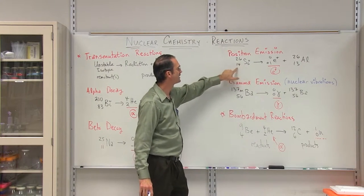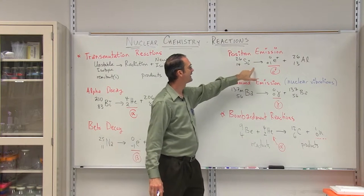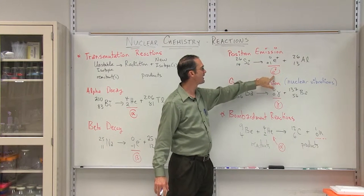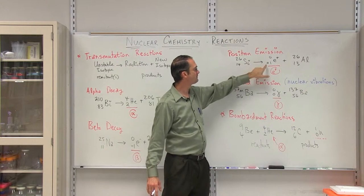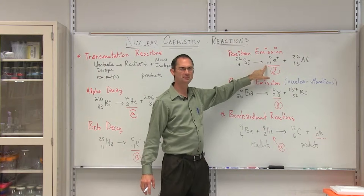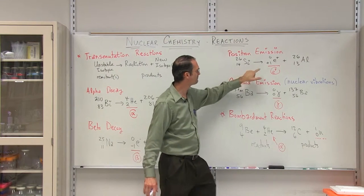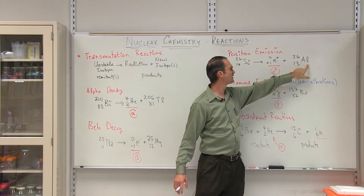In this case, if you have silicon, it will decay by a positron emission. In this case, 14 is the charge. We're going to lose a positron, which is a plus 1. So we have 14 minus a plus 1 is a 13, leaving us aluminum.